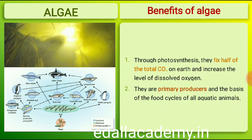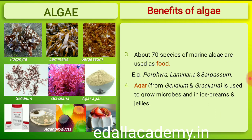Algae are useful to man in a variety of ways. At least half of the total carbon dioxide fixation on earth is carried out by algae through photosynthesis. Being photosynthetic, they increase the level of dissolved oxygen in their immediate environment. They are of paramount importance as primary producers of energy-rich compounds which form the basis of the food cycles of all aquatic animals. Many species of Porphyra, Laminaria and Sargassum are among the 70 species of marine algae used as food.